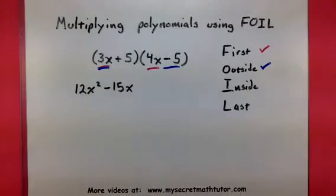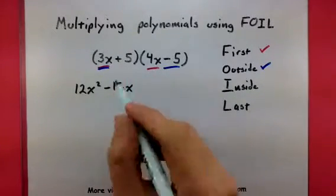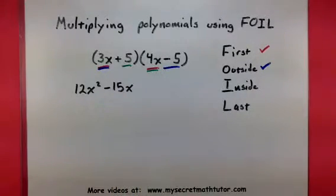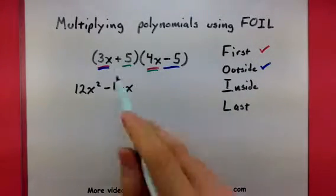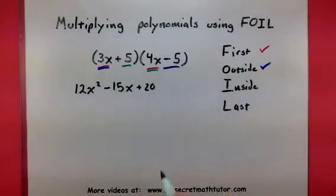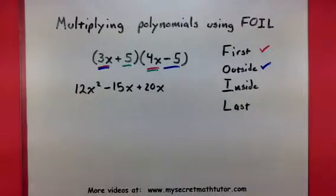Now we want to take care of our inside terms. That would be the 5 and the 4x. So let's multiply those two together. 5 times 4 is 20, and since the 4 has an x, this will be 20x.